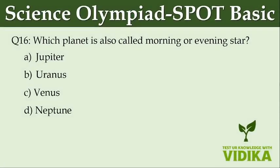Which planet is also called morning or evening star? Option A: Jupiter. Option B: Uranus. Option C: Venus. Option D: Neptune.